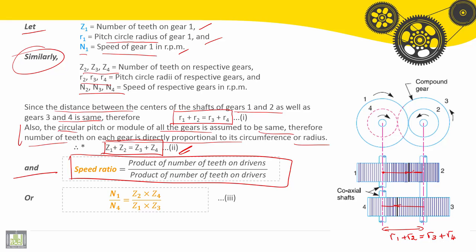Here we'll find the speed ratio. It is the product of the number of teeth on the drivens divided by the product of the number of teeth on drivers. So the speed ratio, the speed on the first gear divided by the speed of the last gear, equals the product of the number of teeth on the drivens. So the drivens here are number two and number four divided by Z₁ multiplied by Z₃.